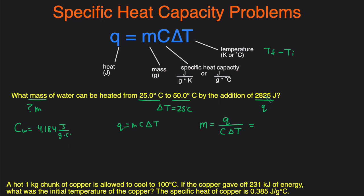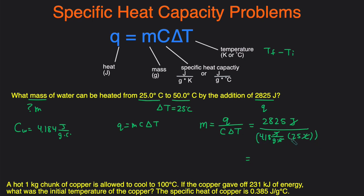Now we plug in the values. Q is 2,825 joules. The specific heat capacity for water is 4.184 joules per gram times degrees Celsius. The change in temperature is 50 minus 25, which is 25 degrees Celsius. The degrees Celsius and joules cancel out, leaving grams. So we do 2,825 divided by (4.184 times 25), and we get 27.0 grams as the mass of the water. That's the final answer.